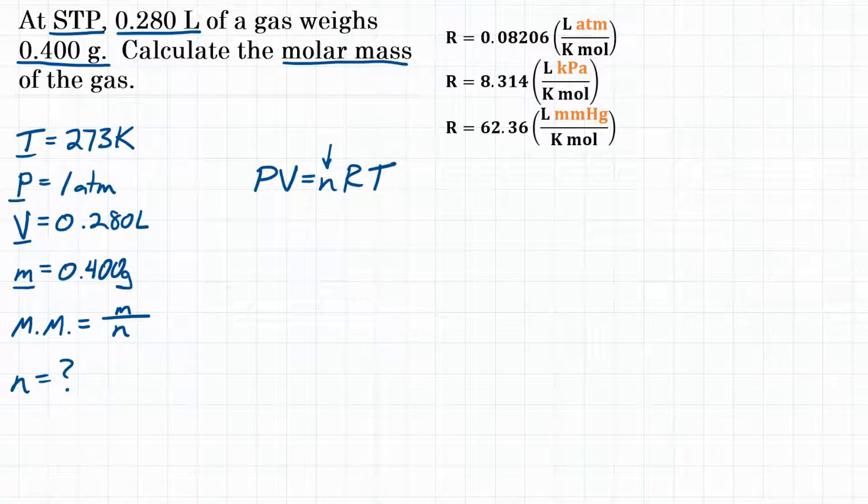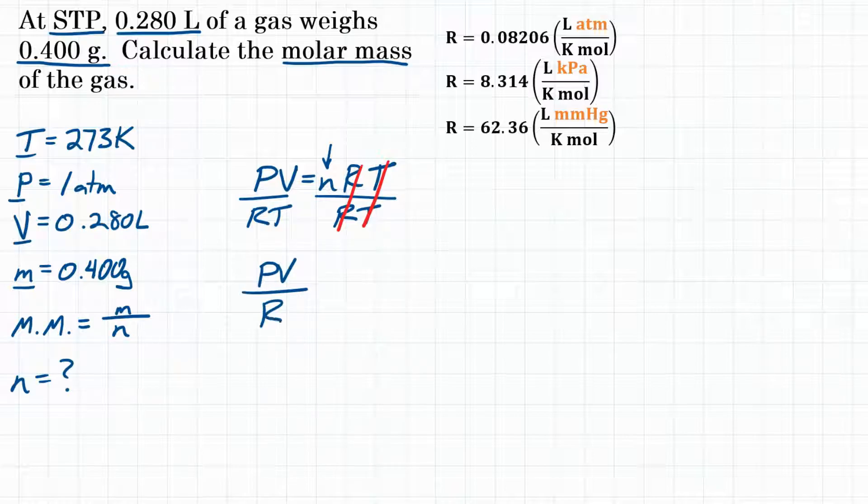We are going to divide both sides by RT. We're doing that so that on the right side, R will cancel and T will cancel. Then we can rewrite our equation as PV over RT equals n.